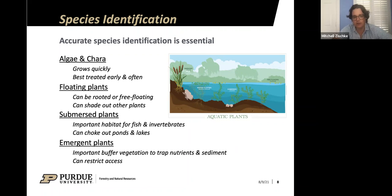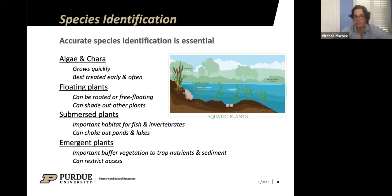The last group are the emergent plants — those that grow right along the shoreline. They might have their roots in the water and some plant material in the water, but they have a large proportion of plant material out of the water. These include things like cattails, water willows, and phragmites.